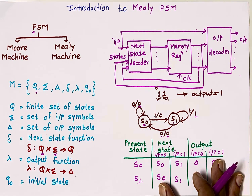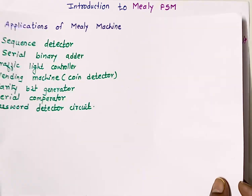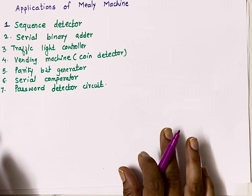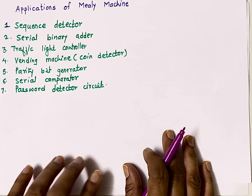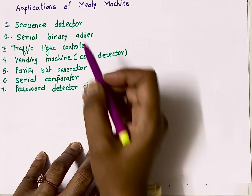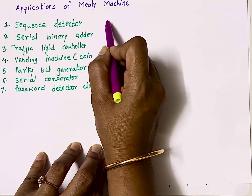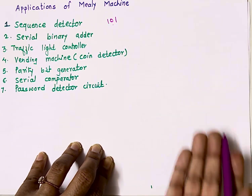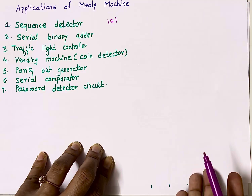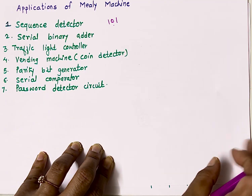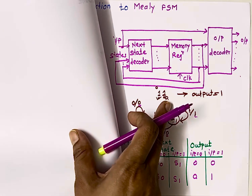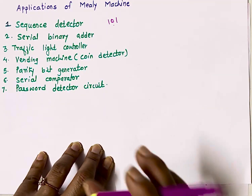Let's understand the applications of Mealy machine. They are used in sequence detectors — for example, detecting sequence 1,0,1 or as in this video, detecting sequence 1,1.